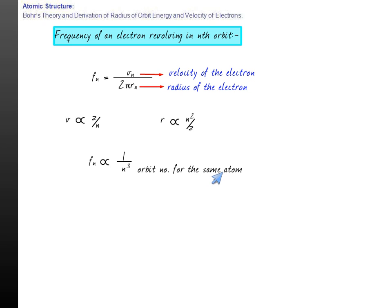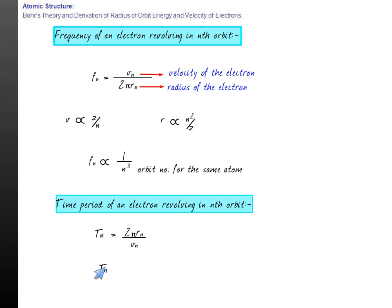Similarly, we can also calculate the time period of an electron revolving in the nth orbit. That comes out to be Tₙ equals 2πrₙ divided by vₙ. So from this we can say Tₙ is directly proportional to n³.